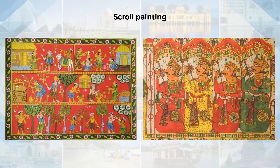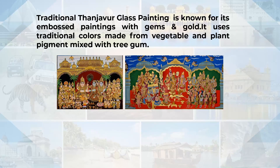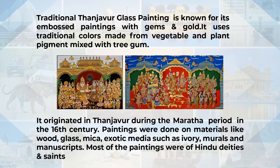In Pata Chitra, the canvas is made of cotton cloth and usually depicts mythological scenes and deities. The Pata Chitras are used to tell stories to village folk. Lord Jagannath and Vishnu avatars are the popular deities depicted on them. Traditional Tanjavur glass painting is also very popular, also known as embossed paintings with gems and gold, using traditional colors made from vegetable and plant pigments mixed with tree gum.